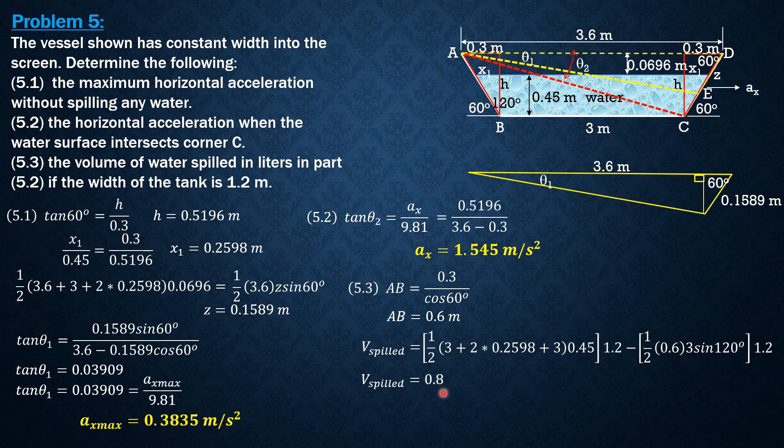So computing, volume of water spilled is 0.825 cubic meter, or 825 liters, because it is to be expressed in liters. Times 1000, so 825 liters.